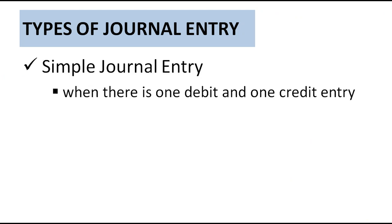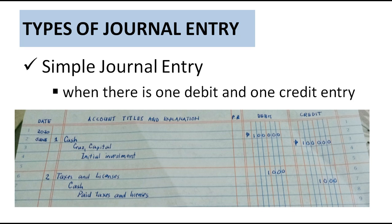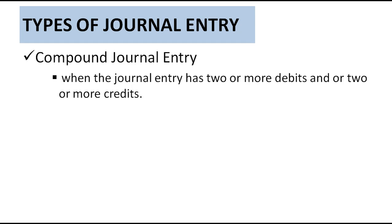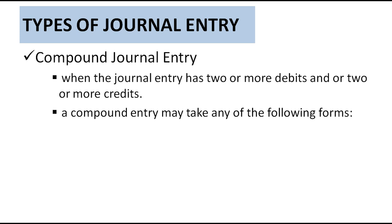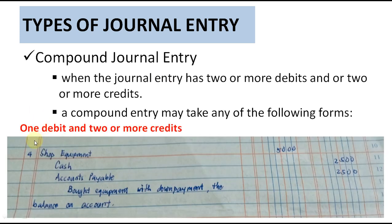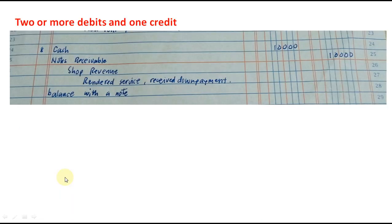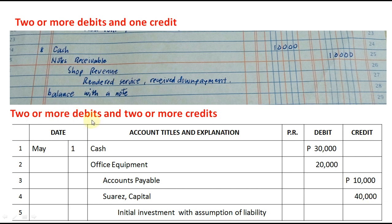There are types of journal entries. The first is a simple journal entry — there is only one debit and one credit entry. Another type is the compound journal entry — when the journal entry has two or more debits or two or more credits. A compound entry may take any of these forms: one debit and two or more credits; two or more debits and one credit; or two or more debits and two or more credits.